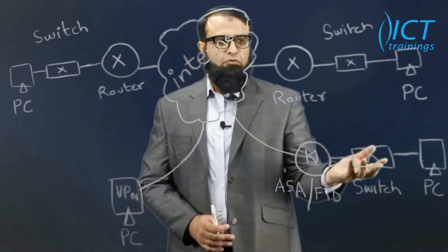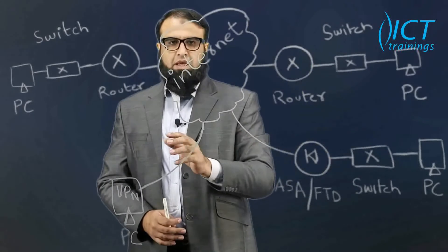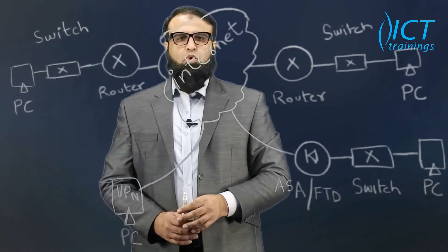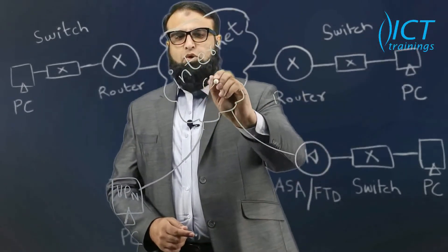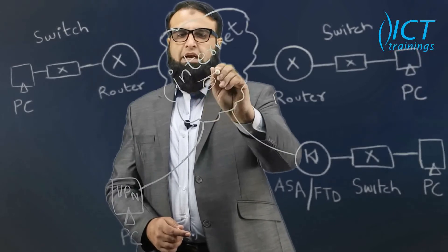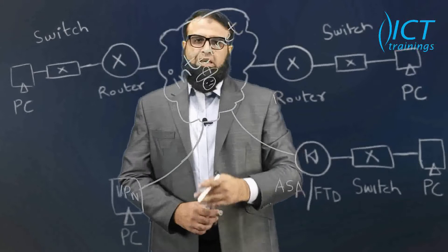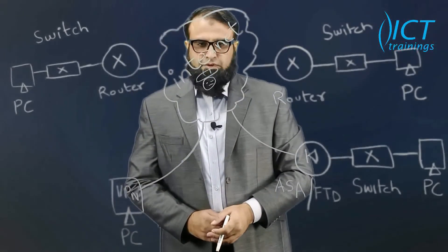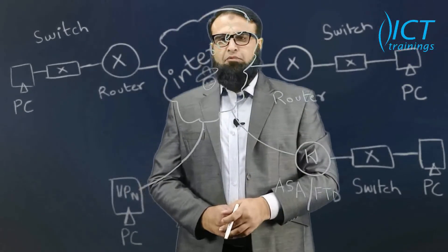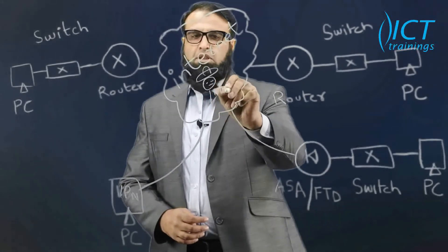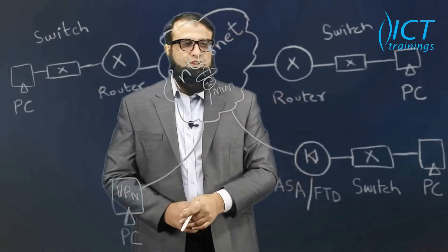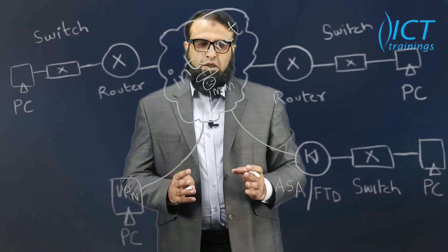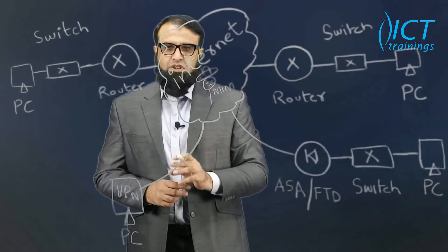The options for exchanging information between all these PCs are two. One, we send data as cleartext — and there will always be a chance that somebody sitting over the internet can eavesdrop, spoof the information, and replay it later for illegitimate purposes. To protect from this type of threat — a man in the middle typically present over the internet — we can send information over the internet by encrypting it. Encryption makes your information secure.